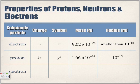The neutron has no charge — zero charge — and is represented by the symbol n⁰. The mass of the neutron is exactly the same as that of the proton, and its radius is also the same as the proton's.